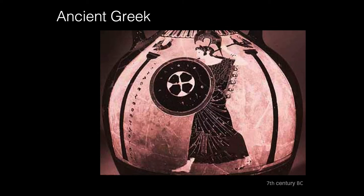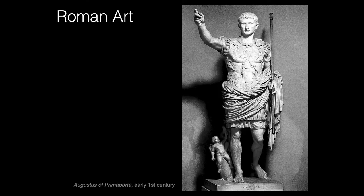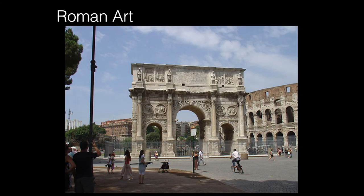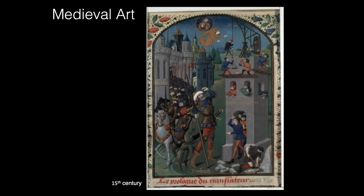A lot of the Greek drawings we have surviving are on vases — very stylistic, very graphic in style. Roman art came later, right around the turn from BC to AD, and their sculpting skills and figure abilities were still really good. They built incredible structures, knew how to make concrete which is why those structures lasted so long. Just incredible artisans.